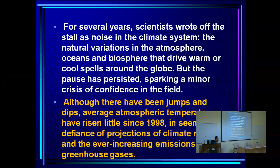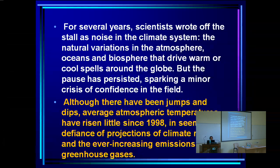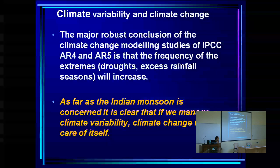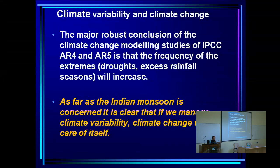This is a very intriguing phenomenon. As it is, it is difficult to trust climate projections over India because the models are so bad and there is so much scatter, and on top of that none of the models have been able to capture what has happened in the last two decades. The major robust conclusion of climate change modeling studies in IPCC AR4 and AR5 is that the frequency of extremes will increase — more frequent droughts and excess monsoon rain — because there is more energy in the system.